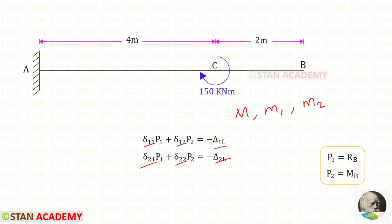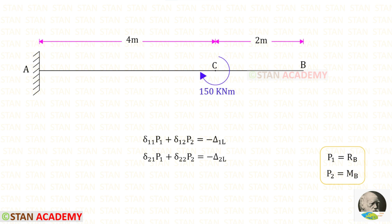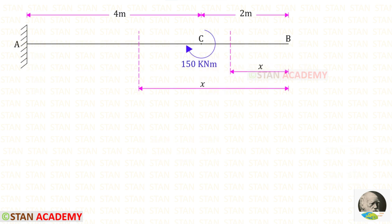First, let us find the moment M. We have to make sections. In this beam there are two different parts, AC and CB, so we have to make two sections. I have made two sections, one in AC and one in CB, both at a distance of X from point B.